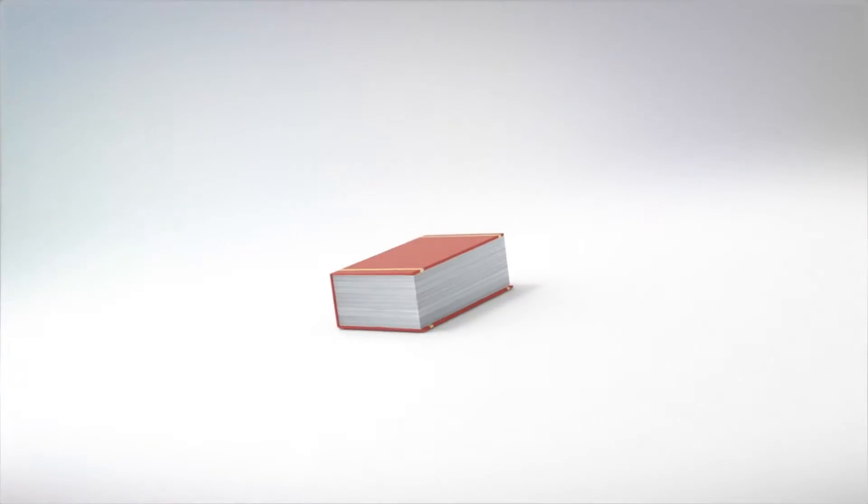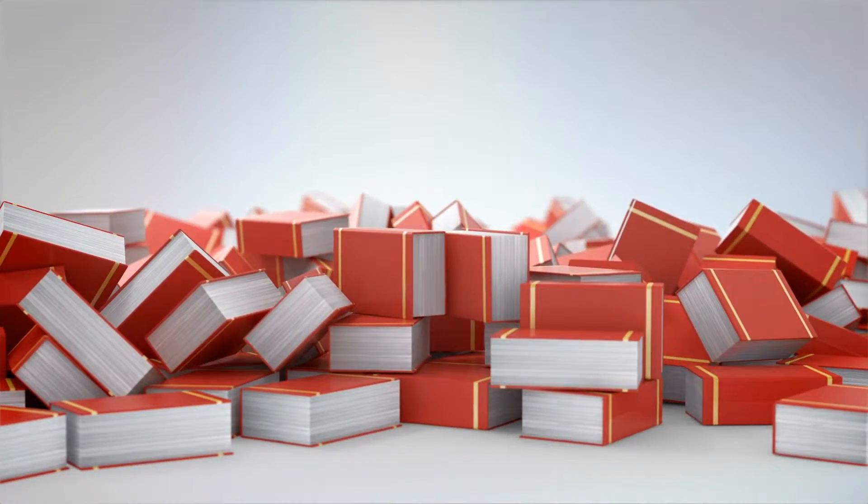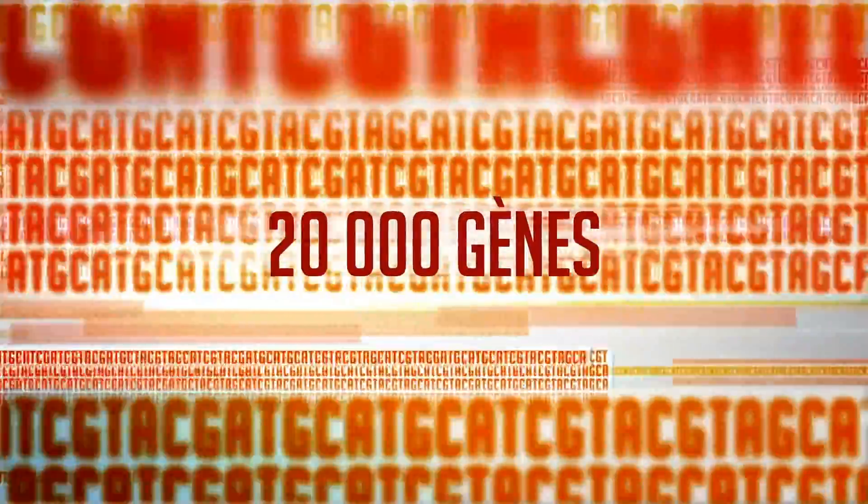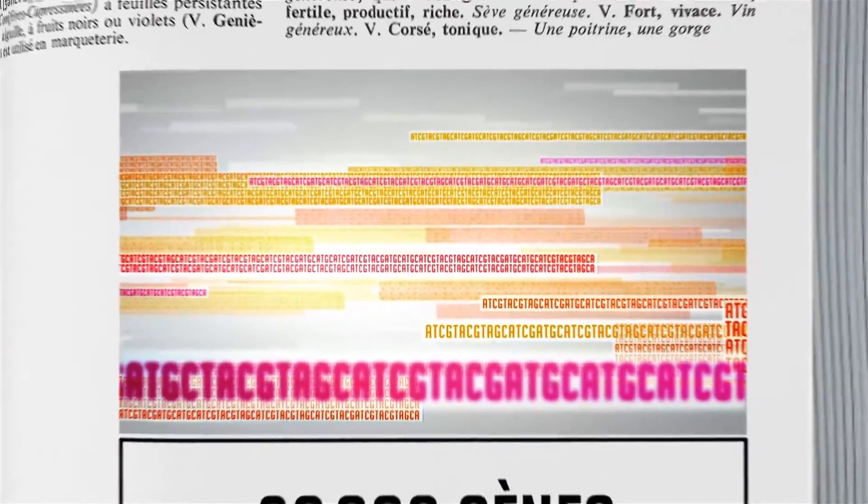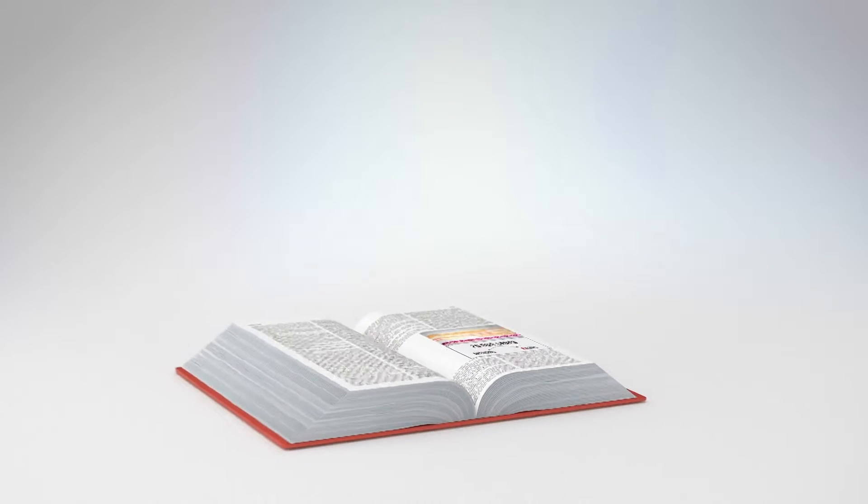Composé de plus de 3 milliards de paires de lettres, le génome de chaque personne remplirait l'équivalent de 400 dictionnaires. Le génome contient environ 20 000 recettes, appelées gènes, eux-mêmes composées d'introns et d'exons.